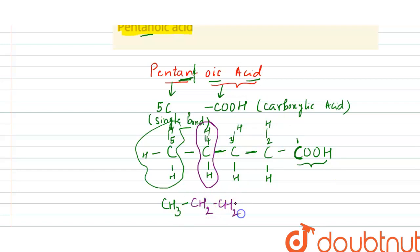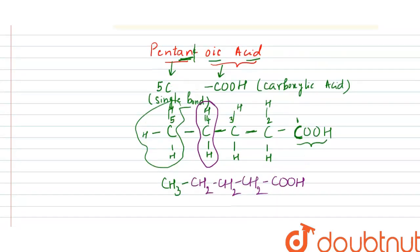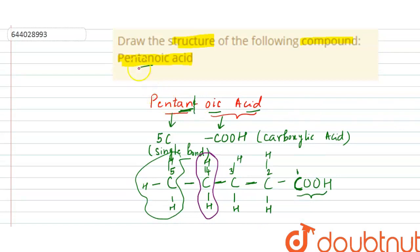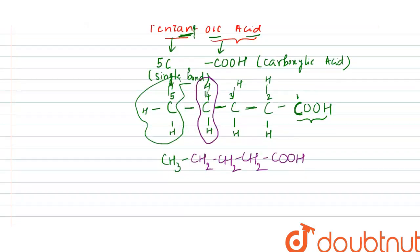This is the structure of pentanoic acid in which there is one COOH, that is carboxylic acid group, hence the name pentanoic acid. It has carboxylic acid group.